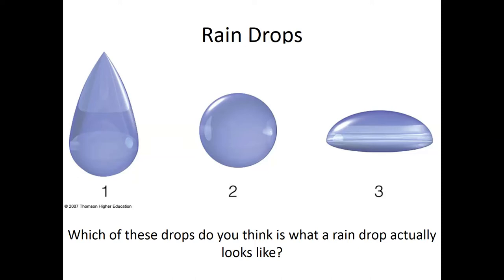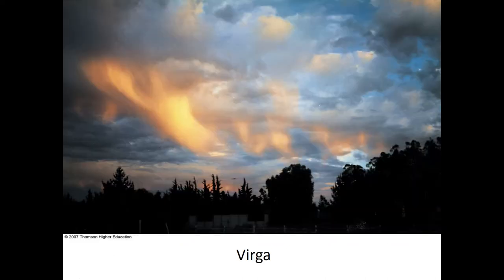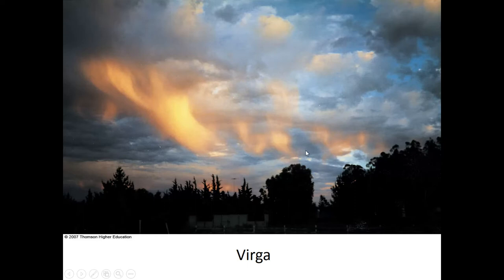Now, looking at these three raindrops, which one do you think the raindrop actually looks like? Most people think raindrops look like tears, but believe it or not, it's not true. Small droplets actually have a very spherical shape, while large droplets have a very lenticular shape — they almost look like spaceships. Here's an image of virga: these wisps coming out of the clouds are actually rain falling from the cloud that evaporates before hitting the ground because the air below is too dry.